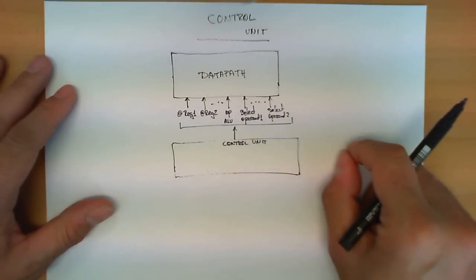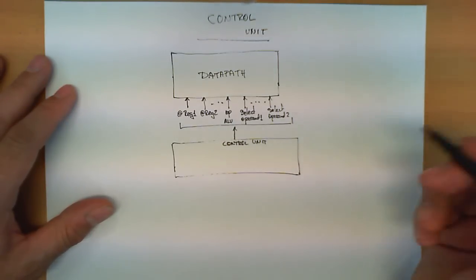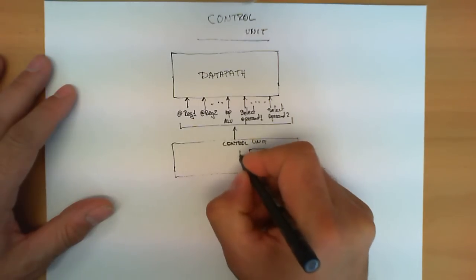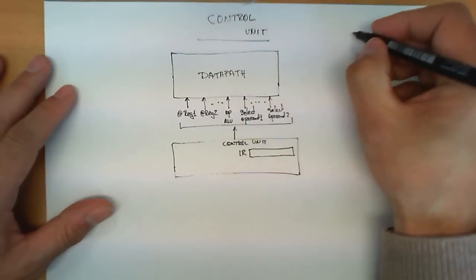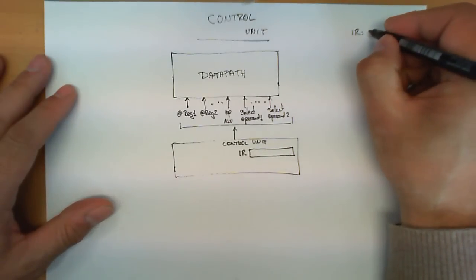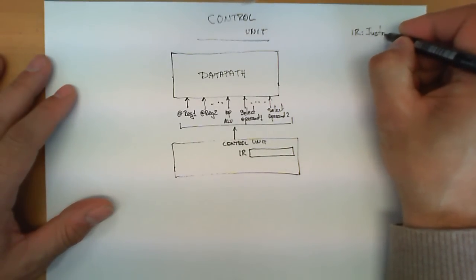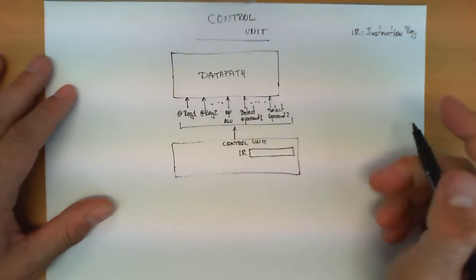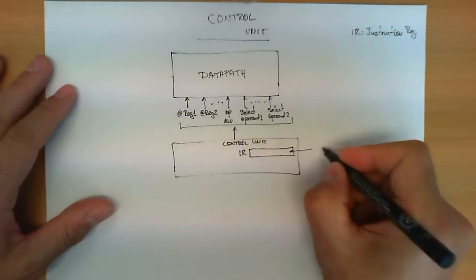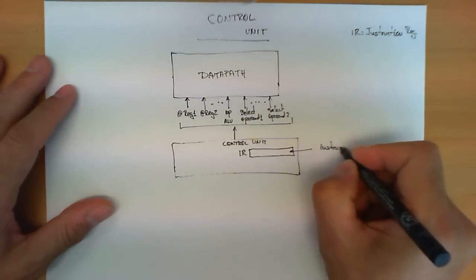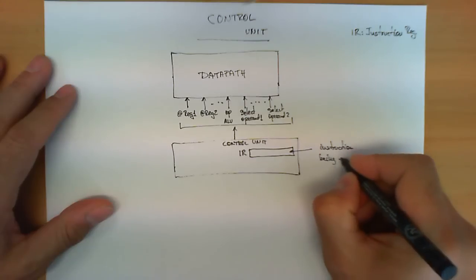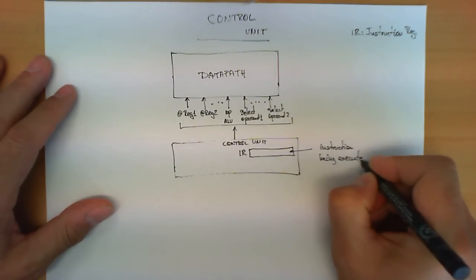How does the control unit know what kind of operation needs to be executed? It has one very important register, typically known as IR, which stands for Instruction Register. This Instruction Register contains the instruction that is being executed by the CPU.